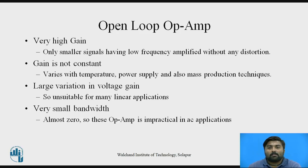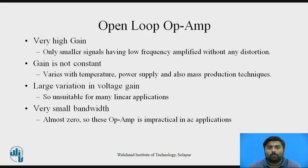This op-amp has some characteristics. First, it has very high gain, and because of that, only a smaller signal having a low frequency is amplified without any distortions. If you are using any other signals with higher frequency, it gets distortion in the amplification. Second, the gain is not constant — it varies with temperature, power supply, and in mass production techniques. Next, there is large variation in voltage gain, so it is unsuitable for many linear applications. And lastly, it has a very small bandwidth, almost nearly equal to zero, so these op-amps are impractical in AC applications.